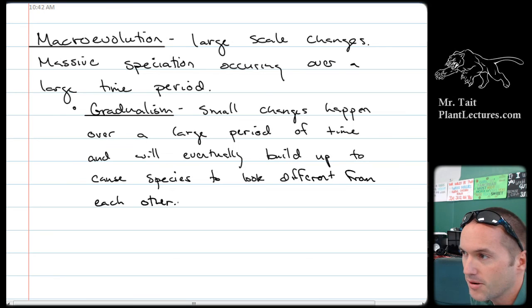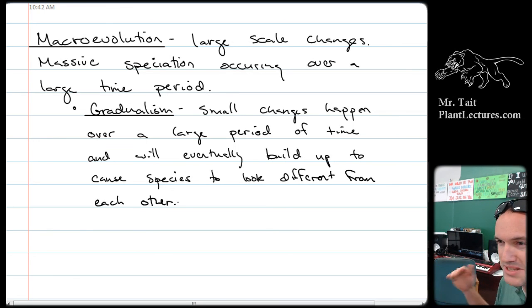What you see are periods where instead of having small changes happen gradually, you see periods where there's no change at all, right? Where species stay the same for a really long period of time. And then all of a sudden, boom, there's this massive shift and everything gets crazy, right? And there's lots of new species that pop up.